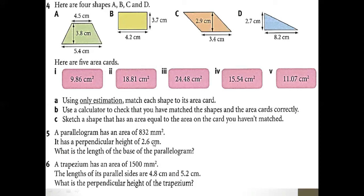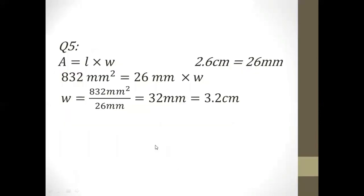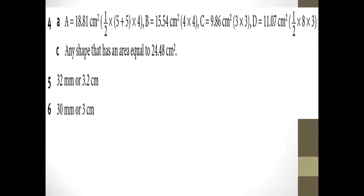Question 5: the area of the Parallelogram is 32 millimeters squared, and the base is 2.6 centimeters. First I convert 2.6 centimeters to 26 millimeters, then I divide 32 by that to get the height in millimeters. When I convert back to centimeters, the answer is 3.2 centimeters. The same approach applies to question 6.